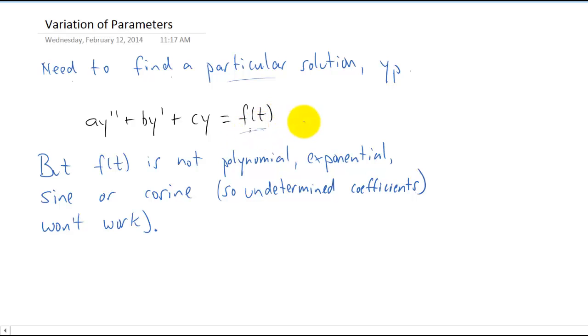It's a non-homogeneous differential equation. But our right hand side of our differential equation is not polynomial, exponential, or sine or cosine. So our undetermined coefficients technique won't actually work. So the right hand side on this differential equation might be maybe a secant or a tangent or some other function.